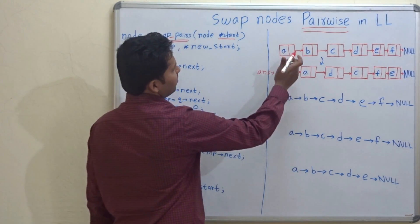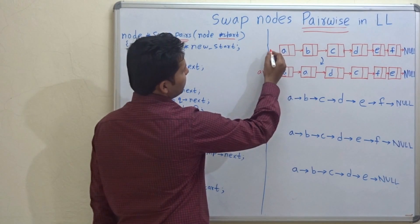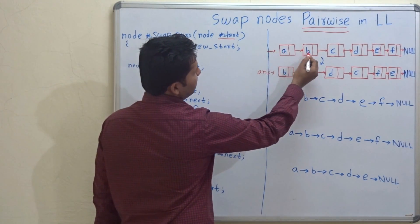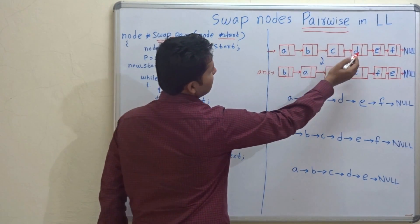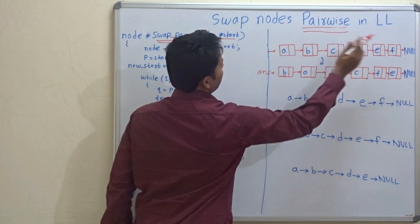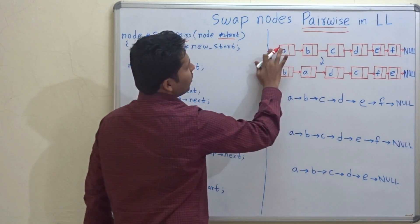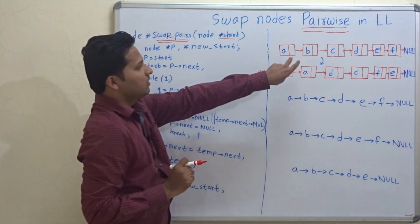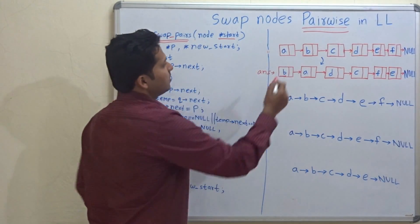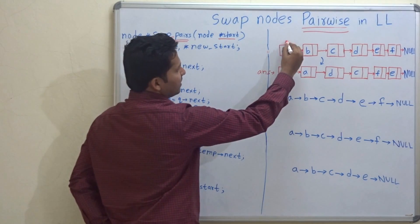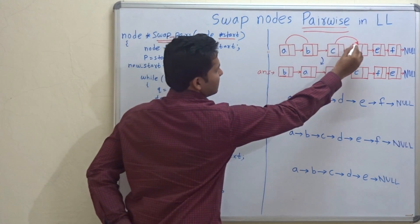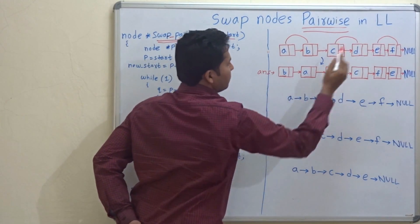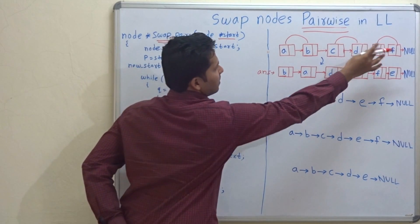In this example, this is the original linked list: A, B, C, D, E, F, and the last node points to null. The pairs A-B, C-D, and E-F will be swapped.